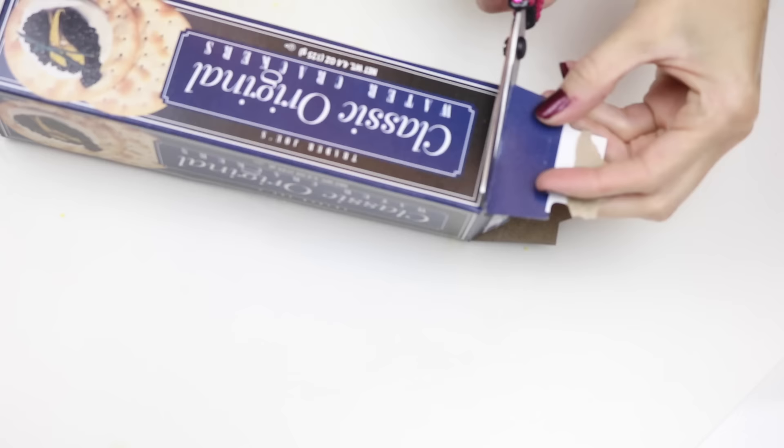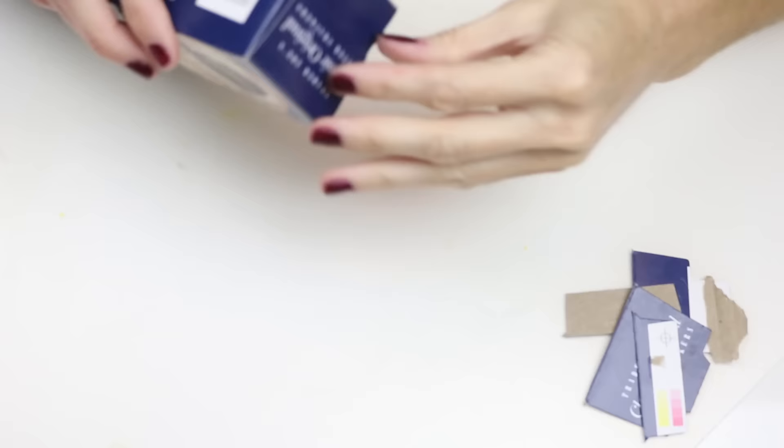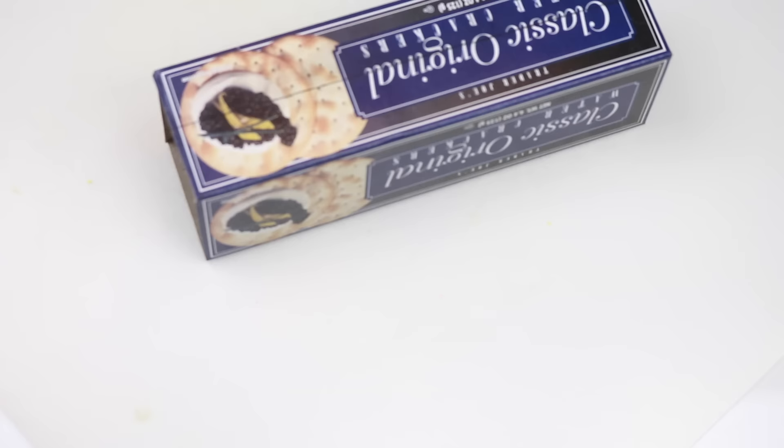I'm just going to cut off the flaps on both ends. The next thing you will want to do is draw a line down the middle and then cut that out.